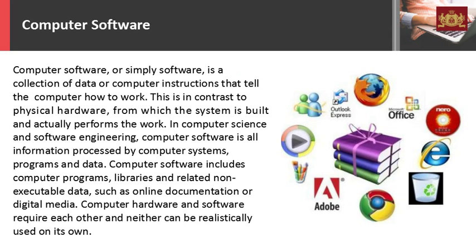Computer software, or simply software, is a collection of computer instructions that tell the computer how to work. This is in contrast to physical hardware, from which the system is built and actually performs the work. In computer science and software engineering, computer software is all information processed by computer systems — programs and data. Computer software includes computer programs, libraries, and related non-executable data such as online documentation or digital media. Computer hardware and software require each other and neither can be realistically used on its own.